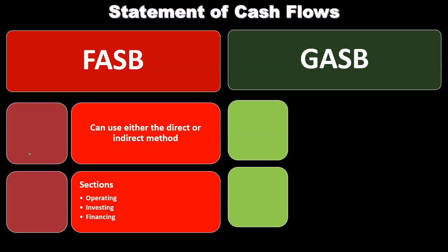The sections of the statement of cash flows, as is the case with a for-profit type of organization under FASB, are operating, investing, and financing. Those are going to be the same sections as we would have for a for-profit type of organization.